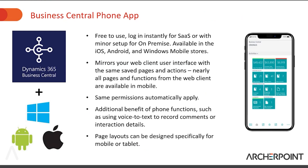First, we're going to look at the Business Central phone app. This is free to use and you can download it from the Windows, Google, or iPhone stores. If you're on Business Central SaaS, you log in just like you would with your web client. If you're on-premise, there's a little bit of setup required, but after that you log in as you normally would.